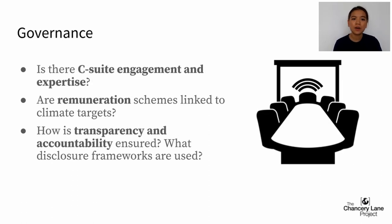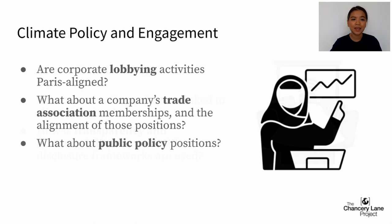We want to think about high-level engagement for these targets. Are decisions around climate risks taken at the board level? And how is accountability ensured? Interim targets will contribute to this, as will reporting and disclosure frameworks like the TCFD and SASB. Lastly, we want to query whether the corporate's lobbying activities, trade association memberships and public policy positions are Paris-aligned.